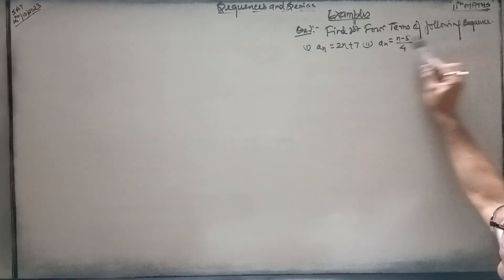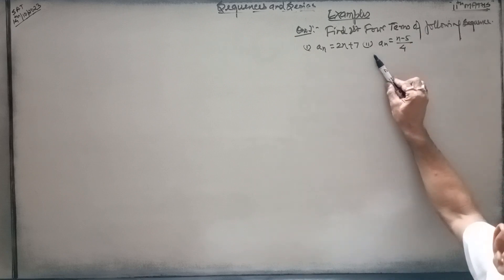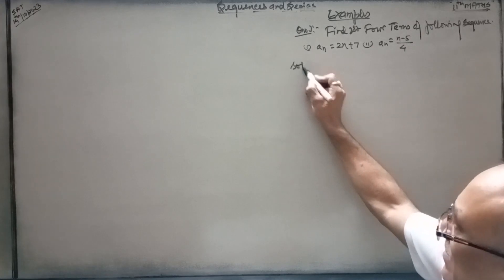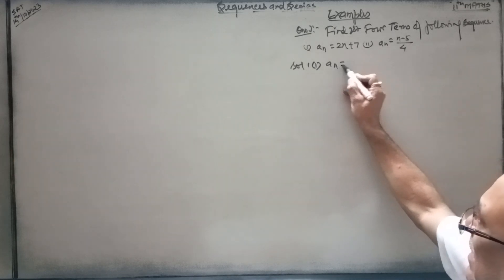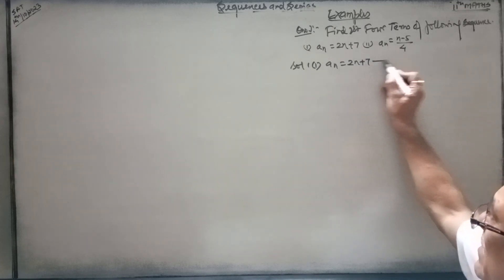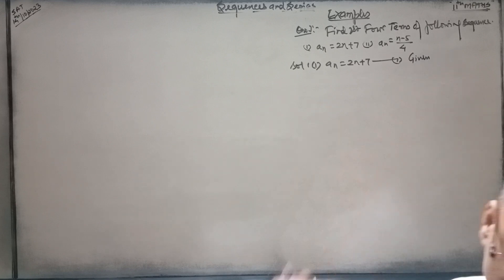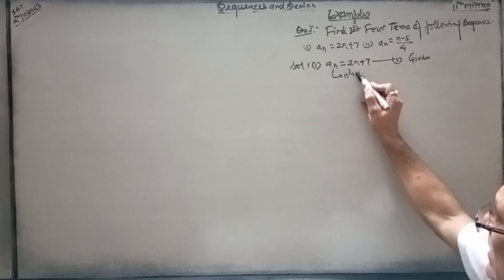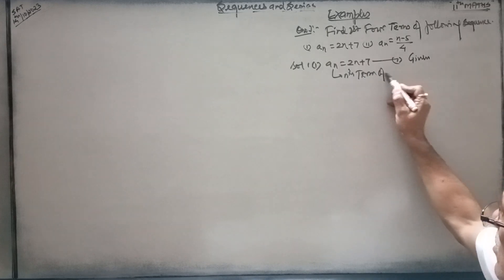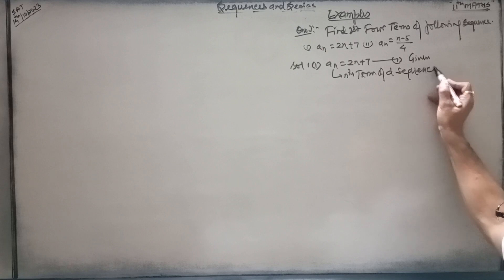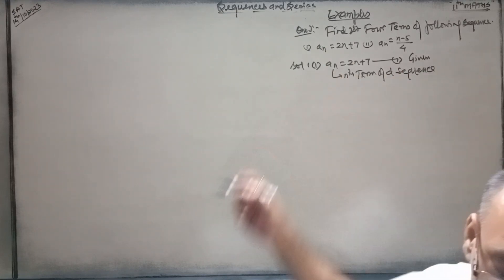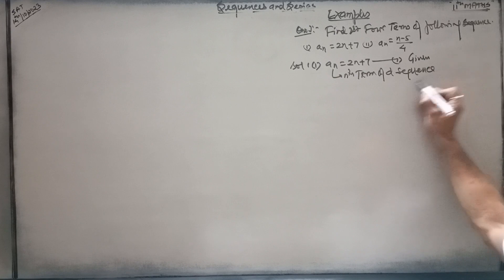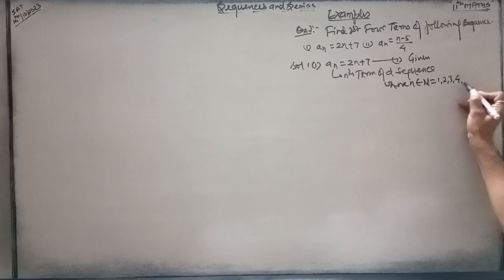Find the first four terms of the following sequence. This is called the nth term of the sequence, and this is the last term of the sequence, where n belongs to capital N and it is 1, 2, 3, and 4, and so on.